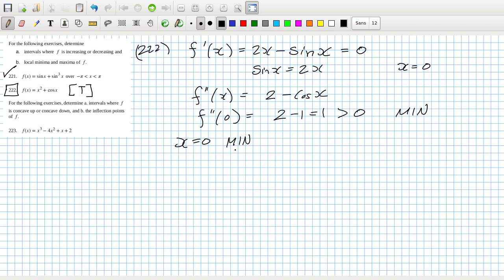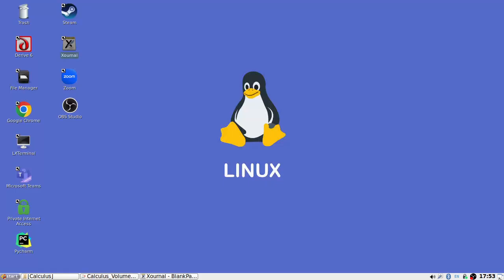So x equals zero is a min. But that seems wrong, doesn't it? Because there should be other solutions here. So I'm going to open up some software.